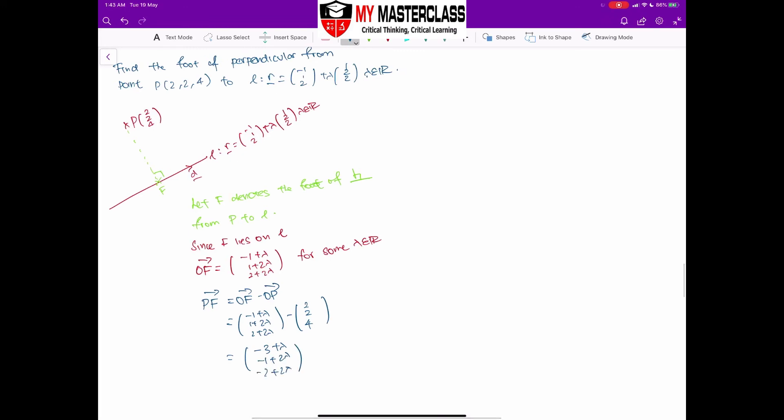Once you hit this stage, I need to remember that PF is perpendicular to the line. So I can quickly say that since PF is perpendicular to my line, I take PF dot with my direction of my line, which is (1, 2, 2), I will get 0. This is my direction of my line. From here, I'm going to quickly expand out.